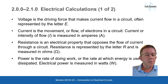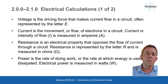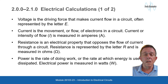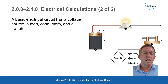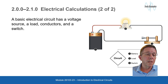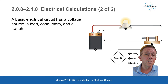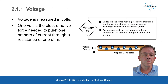Power is the rate of doing work, or the rate at which energy is used or dissipated. Electrical power is measured in watts, W. A basic electrical circuit has a voltage source, a load, conductors, and a switch. Voltage is measured in volts.